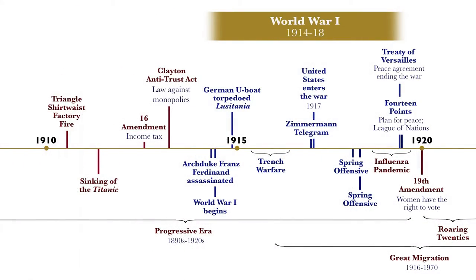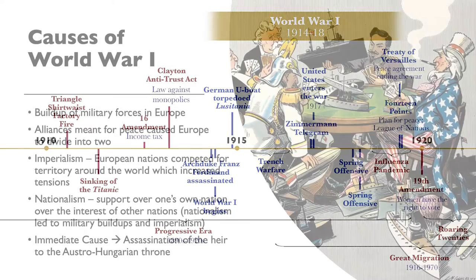Looking at this timeline, World War I was between 1914 and 1918. Before and during this time period in the United States was known as the Progressive Era, which was an answer to changes caused by the Industrial Revolution. And after World War I would come the Roaring Twenties.